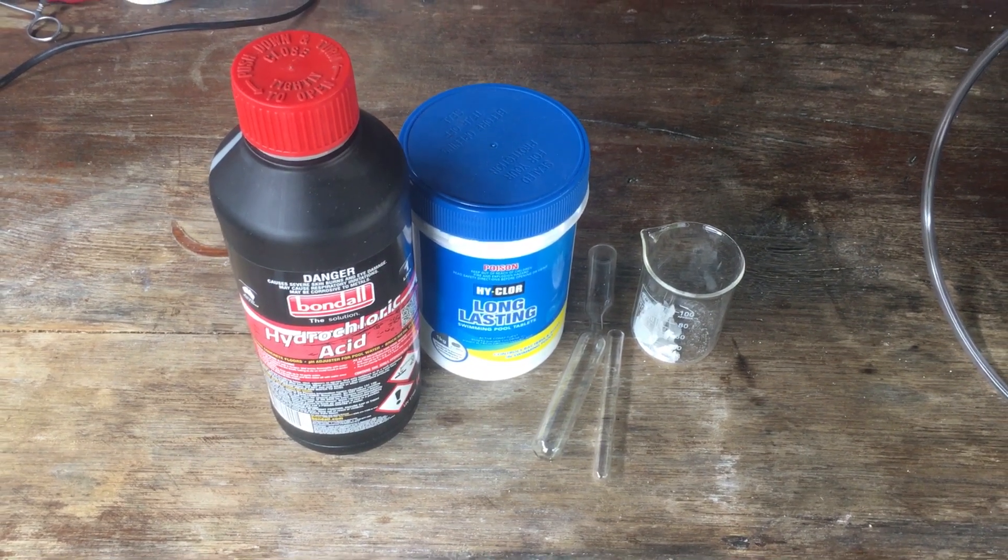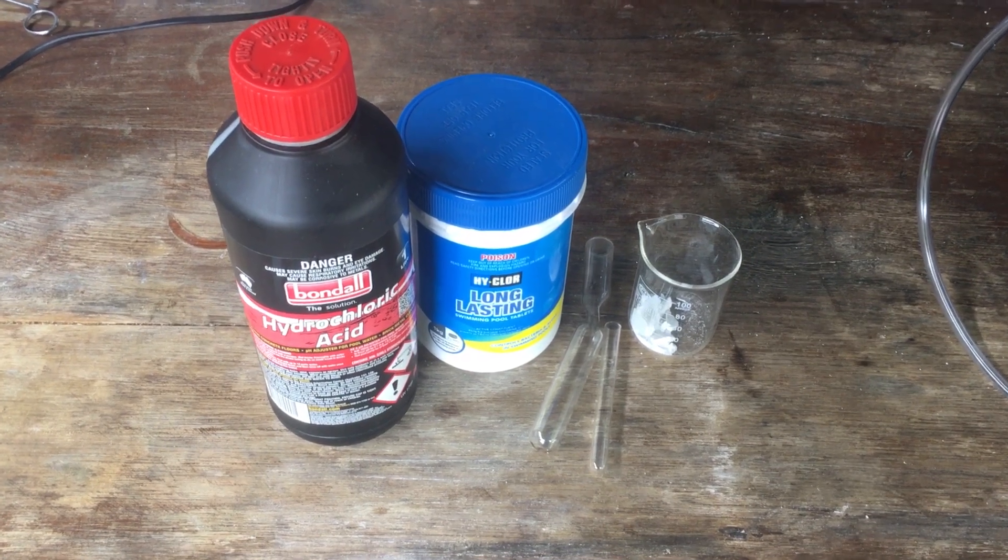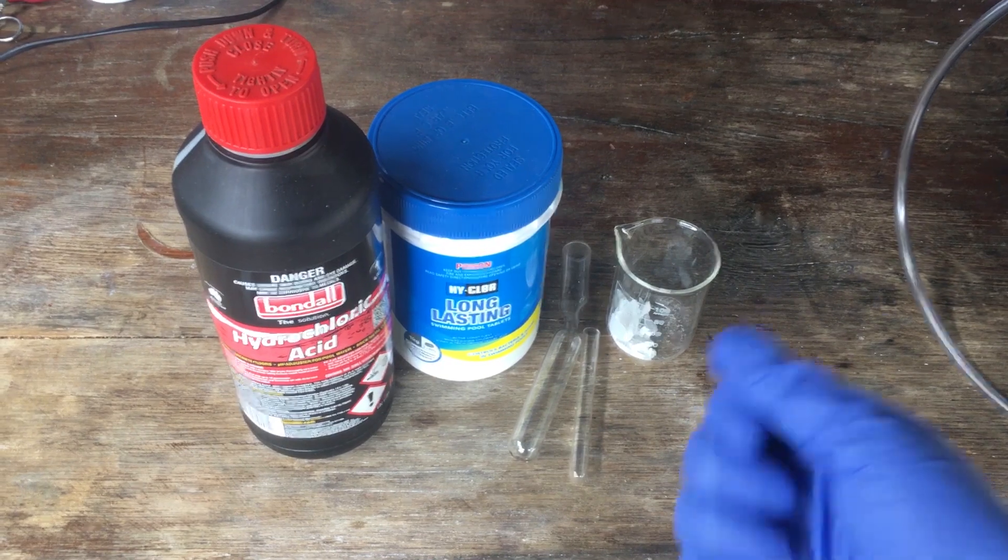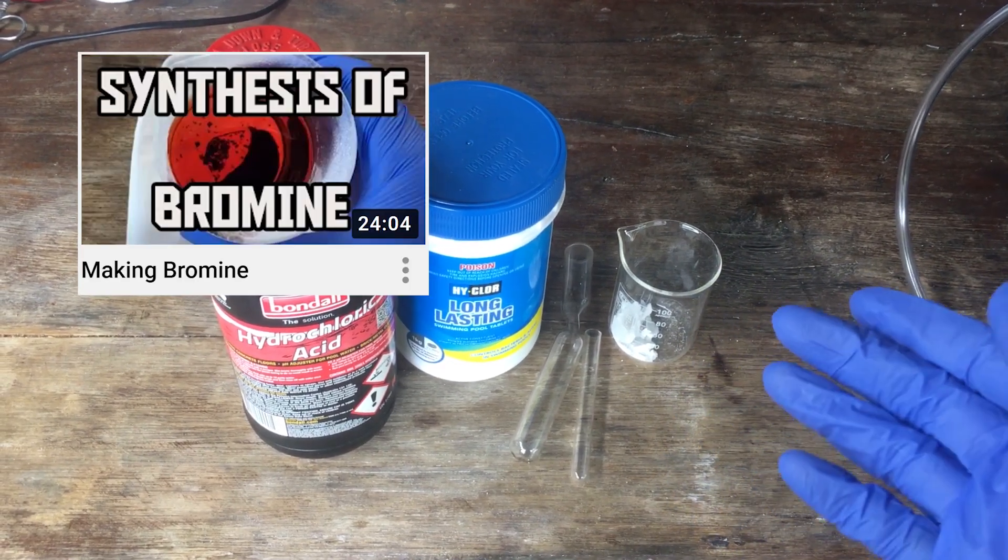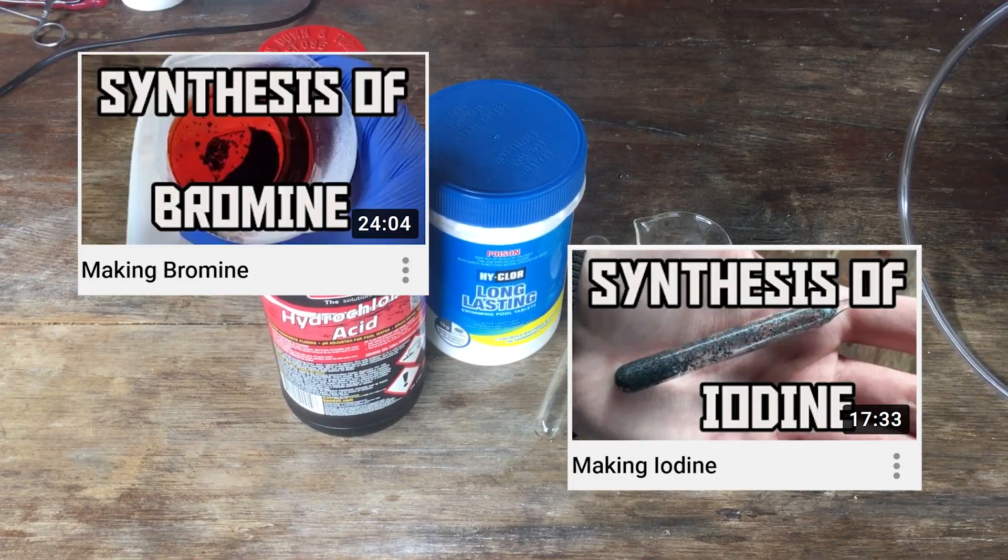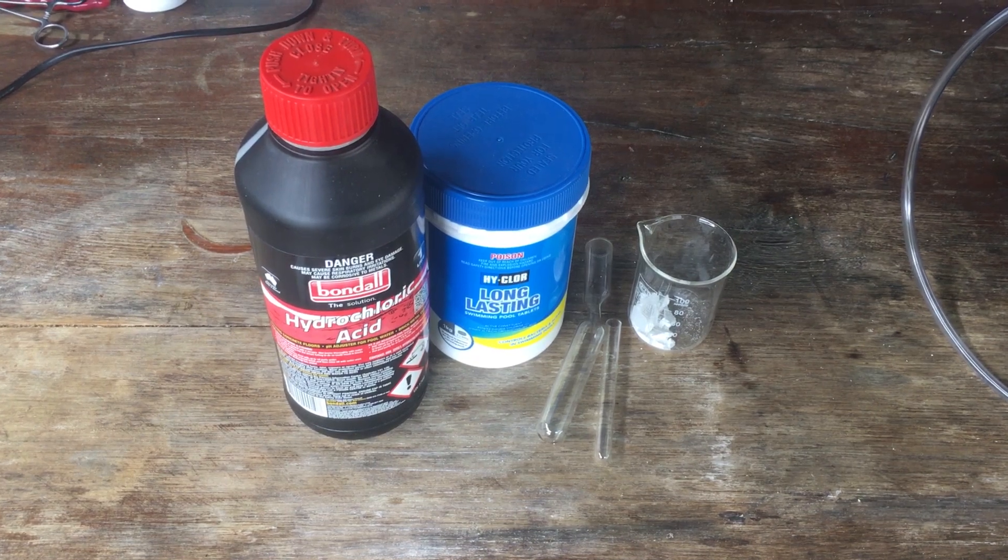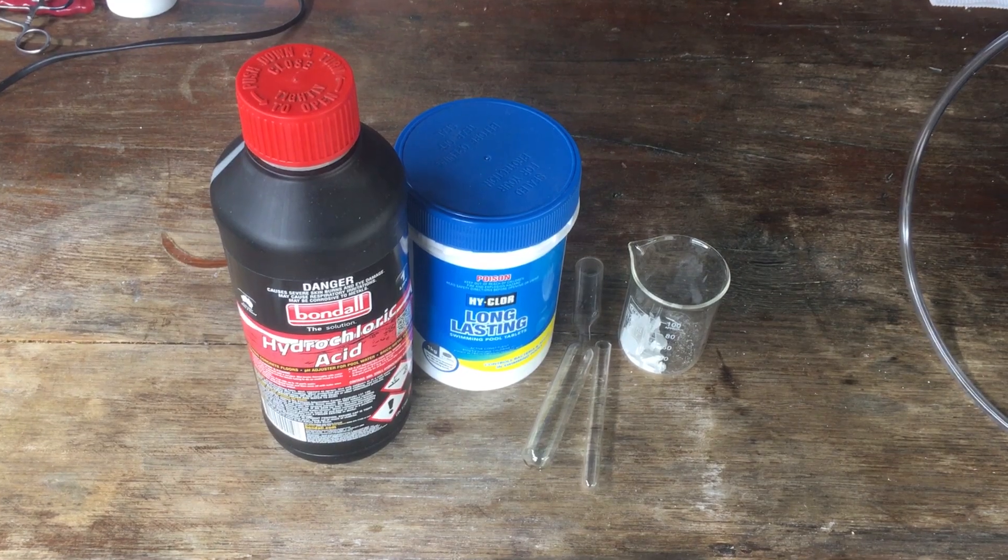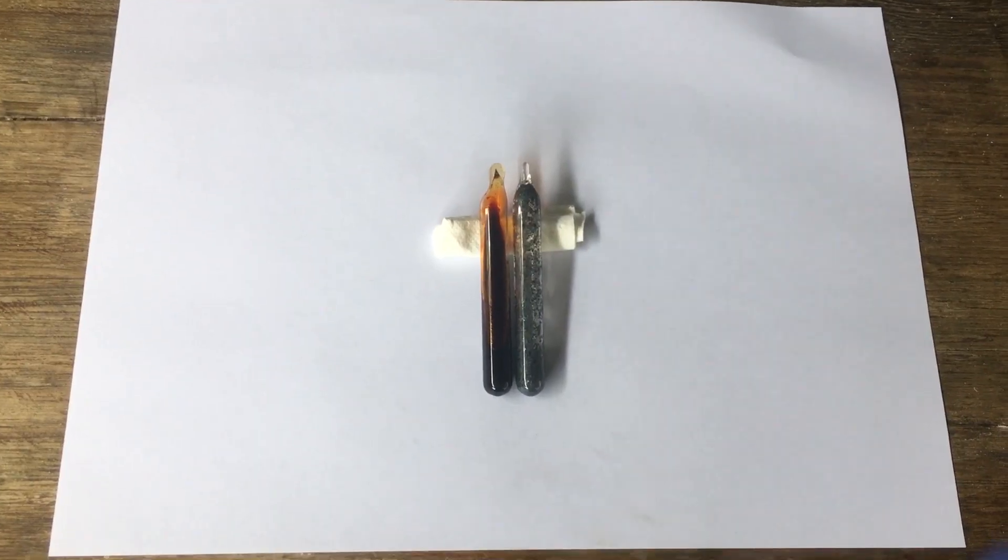Now you may remember quite a while ago on this channel we made a couple of videos making two halogens. One video for making bromine and one video for making iodine. And in each of those videos we put the respective halogen into its own little ampule. I'll grab those ampules out now. And here they are.